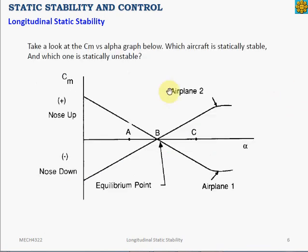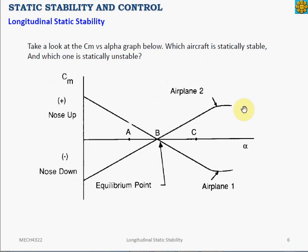Take a look at these two aircraft: airplane one with its CM-alpha curve graph and airplane two with its CM-alpha curve graph. Think about which one is statically stable and which one is statically unstable, and try to explain why. We will discuss this in class next time we meet.